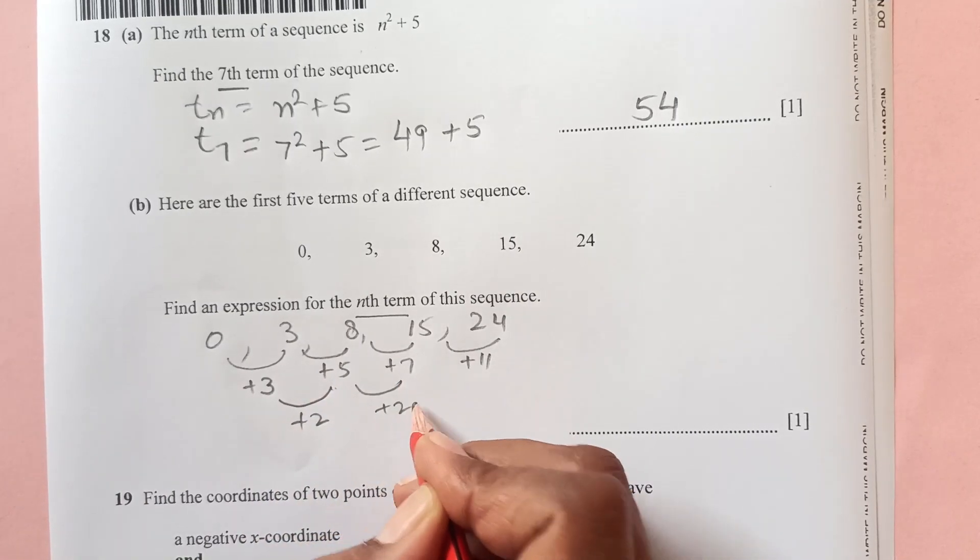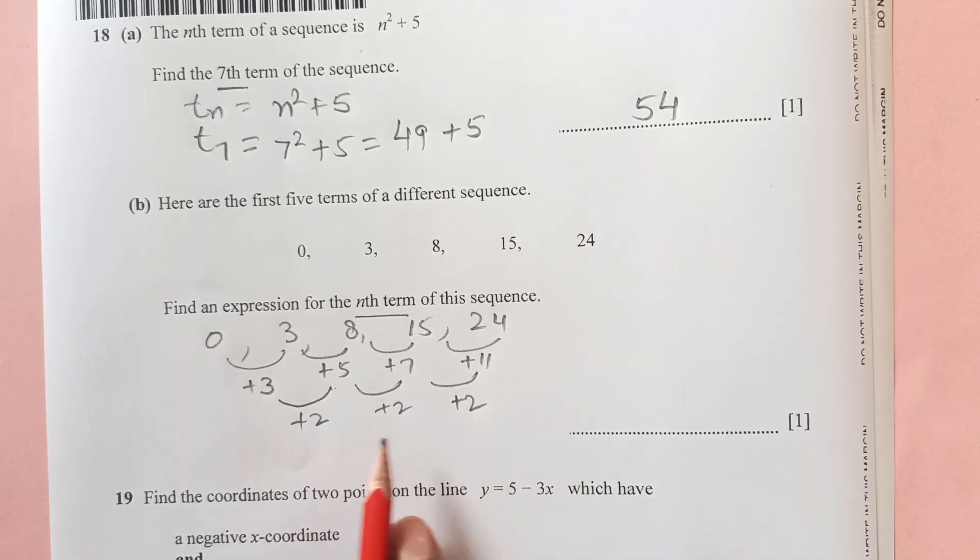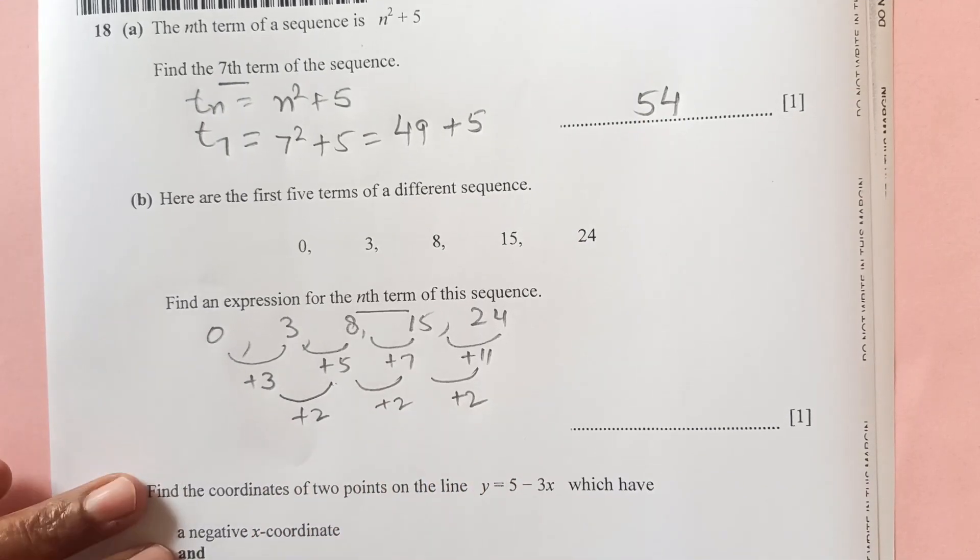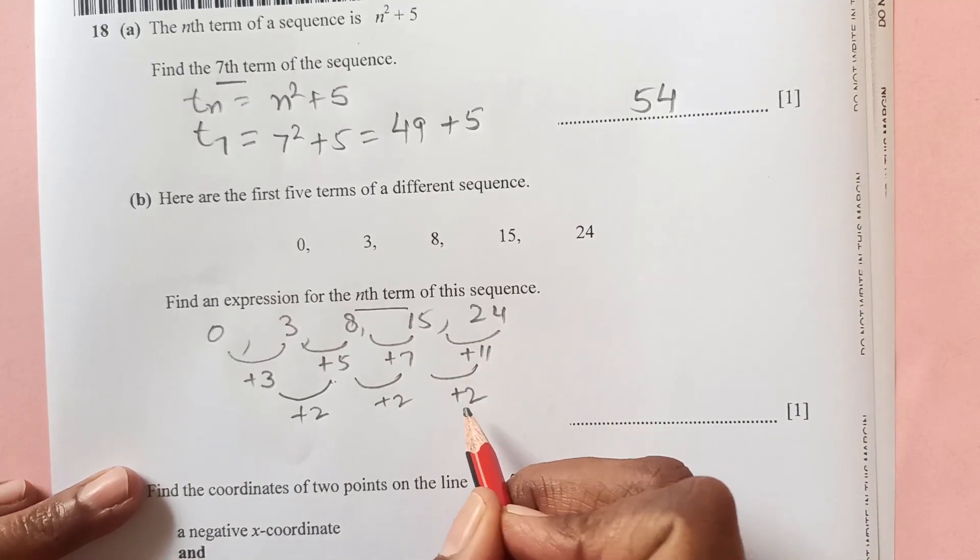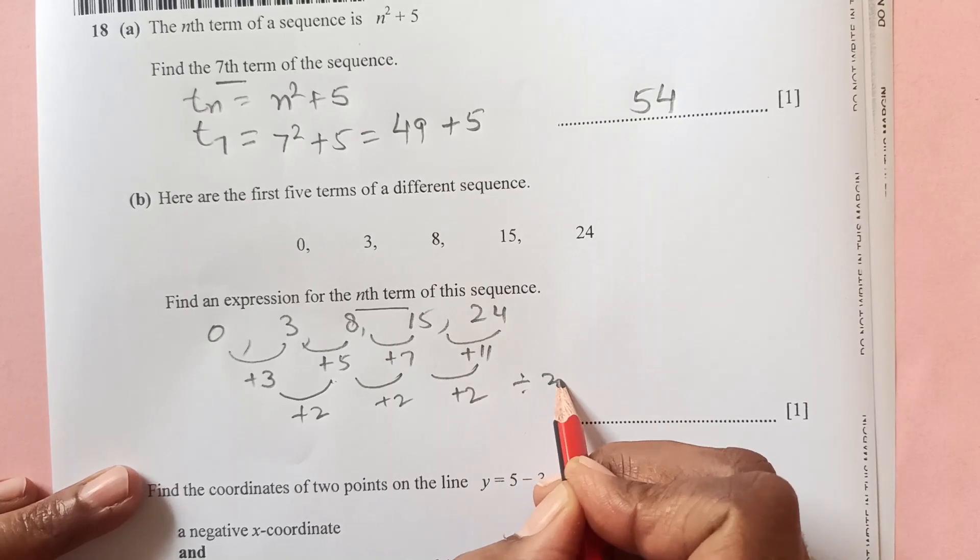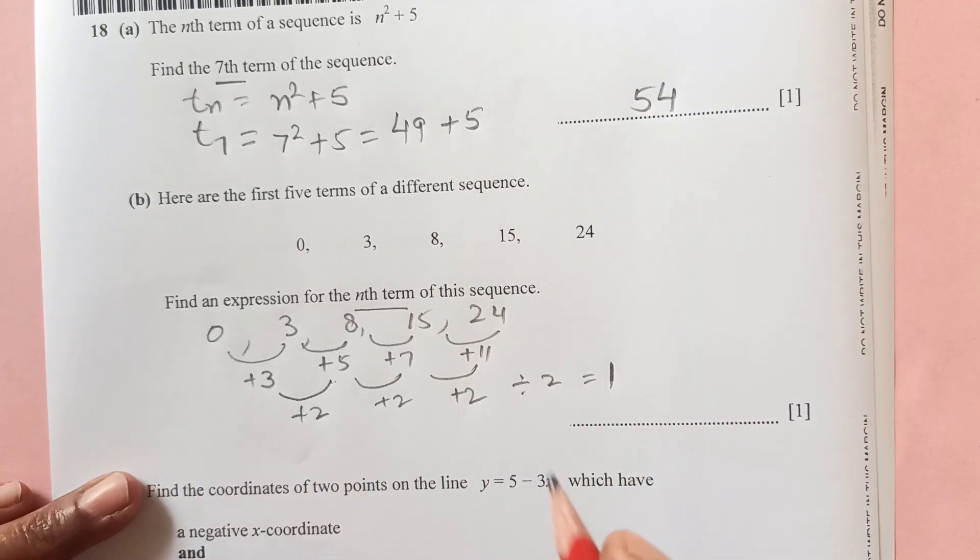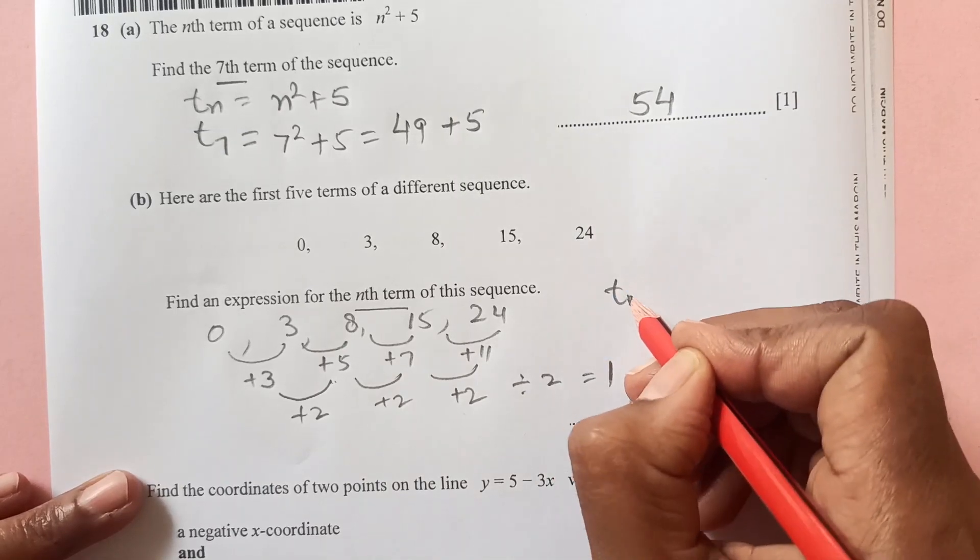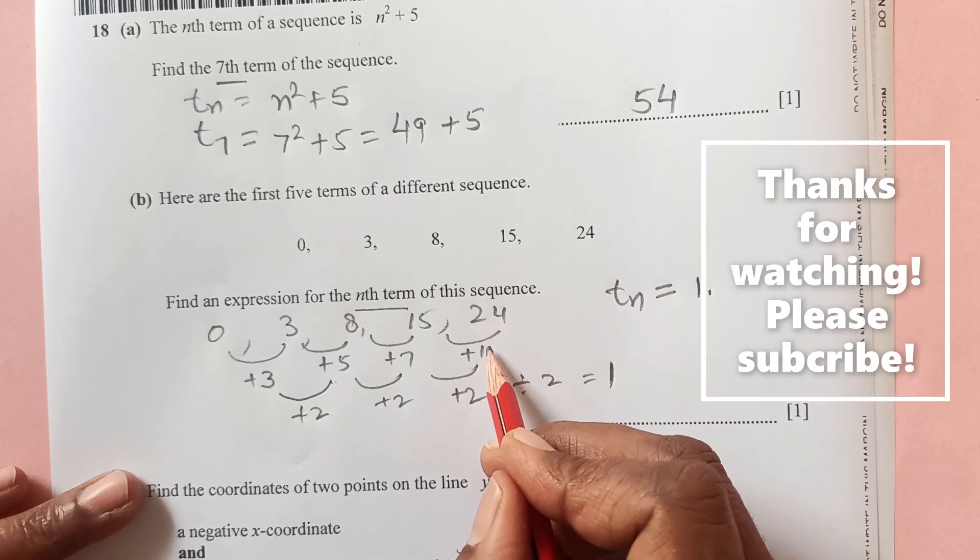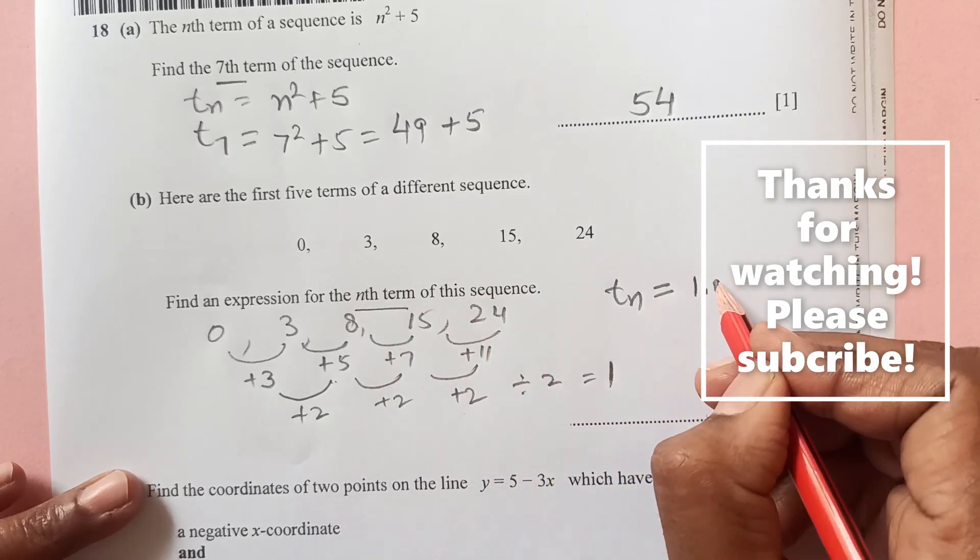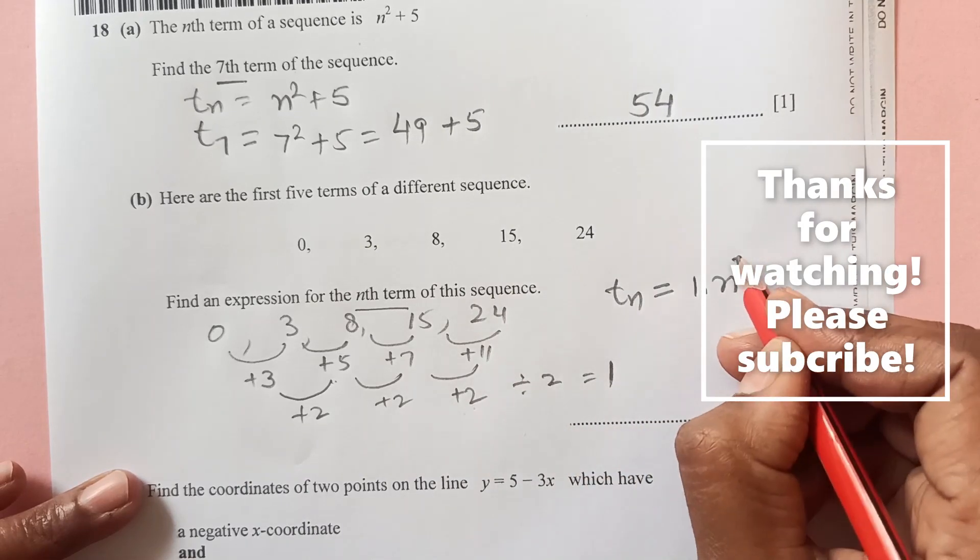You see we are adding here 2, 2, and 2. Now you see this difference is 2 and it is the same. So what you do, when you get here in the second term, whatever you get here, you divide it by 2. So this is 2 divided by 2, it gives you 1. So then for t_n, the nth term, the first term is going to be 1 times n, n is like n squared. So we got this in the first and second step, so n squared.